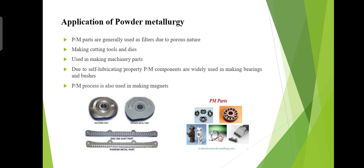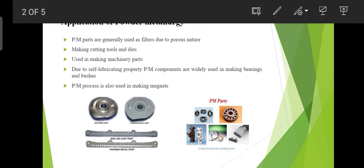Briefly, where is powder metallurgy used? In automobile industries it is used for assemblies, brake pads, abrasives, polishing and grinding wheels. In manufacturing, it is used for cutting and drilling tools, hard metals, and electric and magnetic devices.